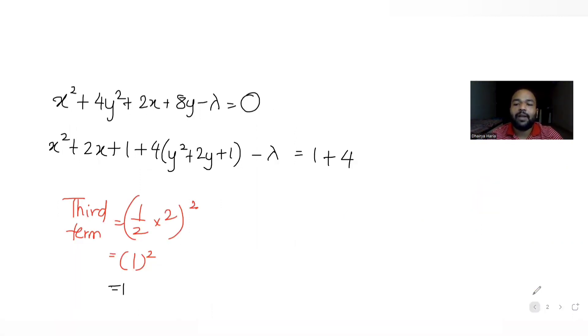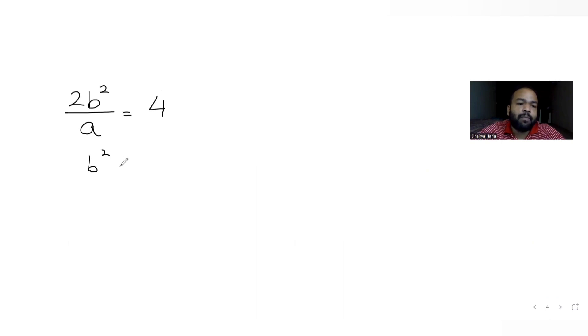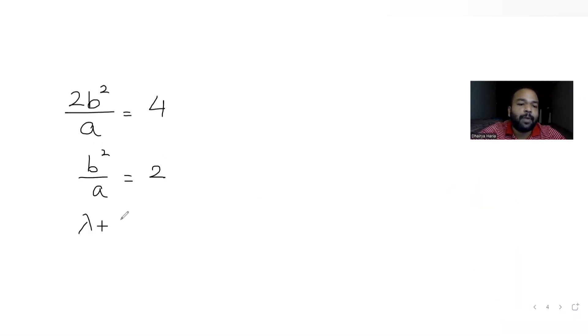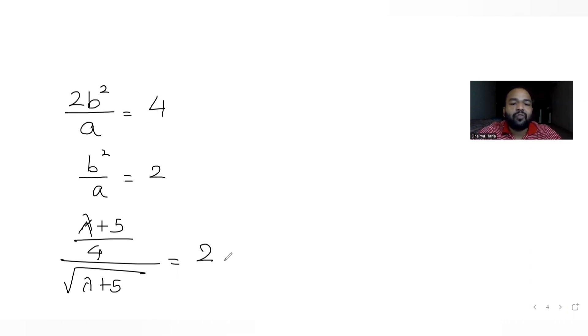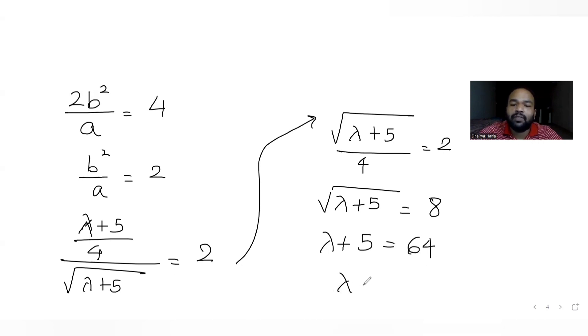Now using the condition that the length of the latus rectum is 4: the formula is 2b²/a = 4, so b²/a = 2. Substituting b² = (λ + 5)/4 and a = √(λ + 5), we get (λ + 5)/(4√(λ + 5)) = 2, which simplifies to √(λ + 5) = 8. Therefore λ + 5 = 64, giving λ = 59.